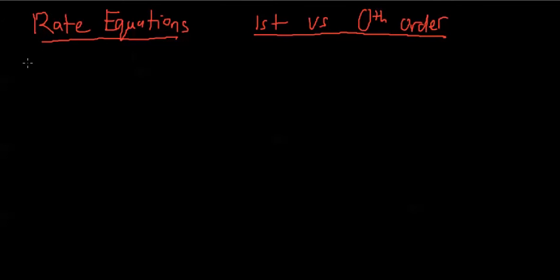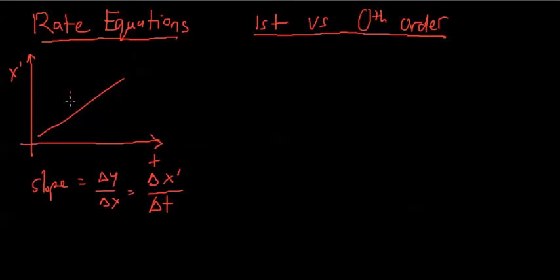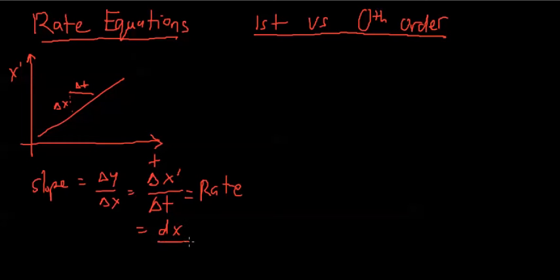Let's jump right into it. So what's rate exactly? If we were to draw a graph, we have on the y-axis x, which is amount of drug. And then on the x-axis, it's t. So if we draw a line, the rate is pretty much the slope of this line. The slope is change in y over the change in x, referring to the axis. So the change in y-axis would be the change in x, over the change in t. You can also express this as dx over dt, which is also equal to rate.